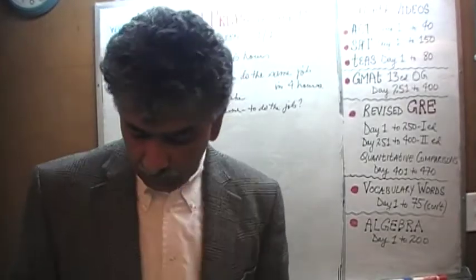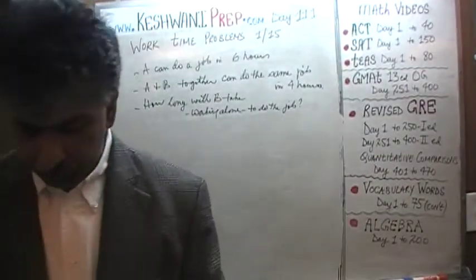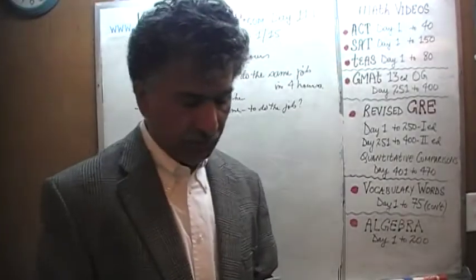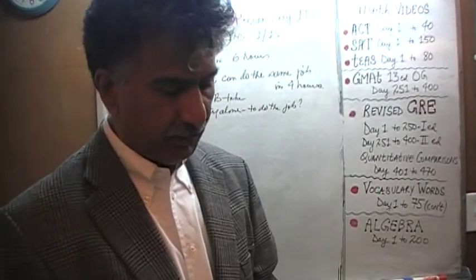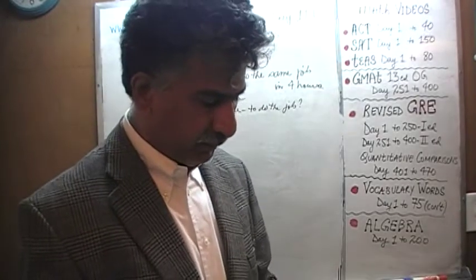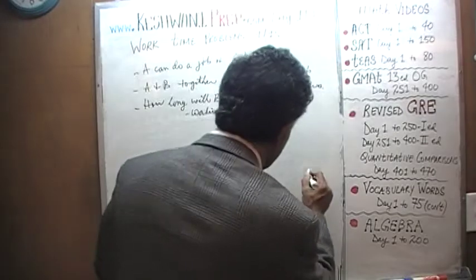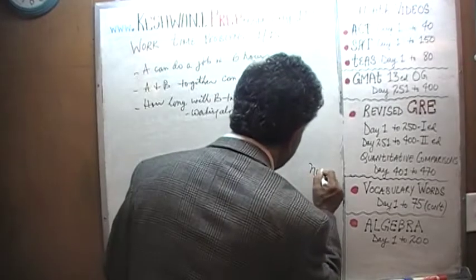Very straightforward scenario — we are told that if they were to work together they can finish the job in four hours, and if A were to work by himself he would take six hours. The question is, based on this information, how long do you suppose B will take to finish the job? In the previous problem I put down a word on the blackboard — N-U-B.